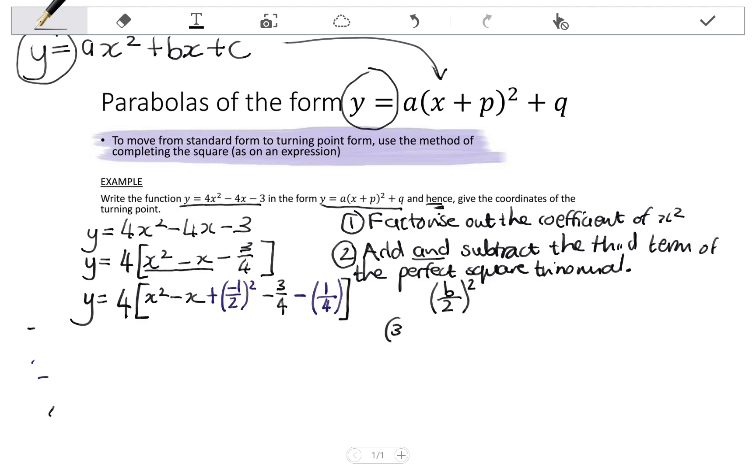Right, our next step is to factorize the perfect square trinomial, and to simplify the rest that we are left with. So I've got y equals 4. I'm going to factorize into curly brackets, and the way we factorize is that bracket squared.